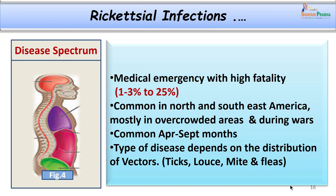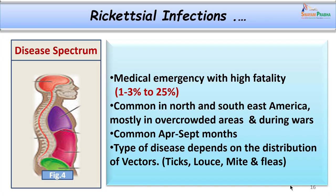Rickettsial fevers are very important because they can have a high fatality rate and can present as medical emergencies. The fatality rate ranges from 1–3% up to 25% when the disease is left untreated. They are more common in the western world, though not commonly seen in India; some diseases are also seen in parts of Kashmir. It is important to consider them as a differential diagnosis in pyrexia of unknown origin cases.